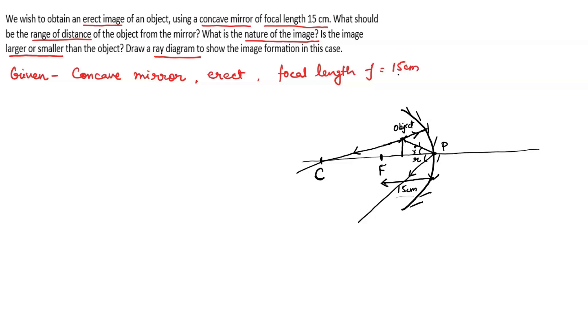Now join these two rays. Here the intersection point, from this point image is formed. Now this is the ray diagram for concave mirror to get an erect image.